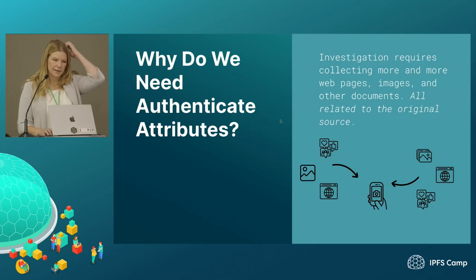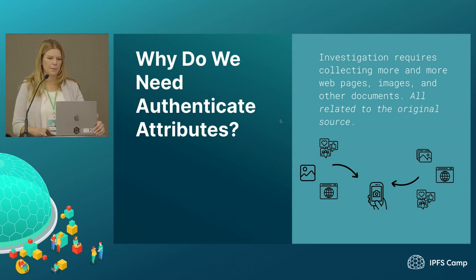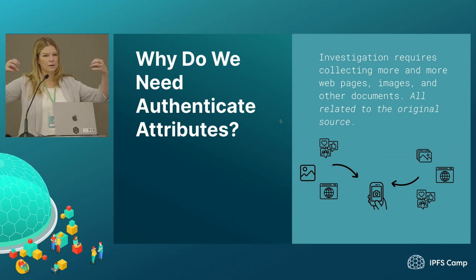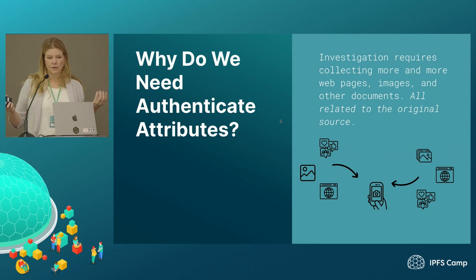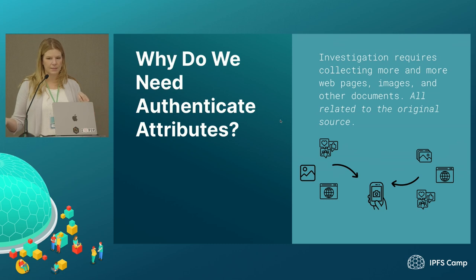So why do we need Authenticated Attributes? We do a lot of investigations in journalism and in human rights investigations. Investigations require collecting more and more web pages, images, and other documents, but we need to relate all of these things to the original source. So if I'm a war photographer and I take a picture, there's more than just that picture that goes into a piece of investigative journalism. There's going to be research on websites, other sources of information — be it textual or an account — and of course other photographs that you might want to grab to corroborate these things.